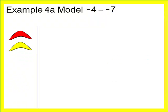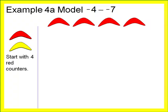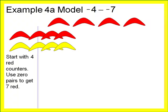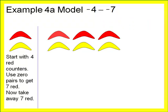For example four, let's model negative four minus negative seven. Start with four red counters to represent negative four. Just as in example three, we don't have enough red counters to take away, so we add zero pairs until we get at least seven red counters in the workspace. Now we can take away seven red counters. What remains is the answer to negative four minus negative seven.